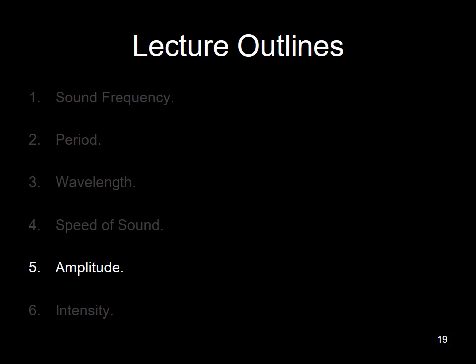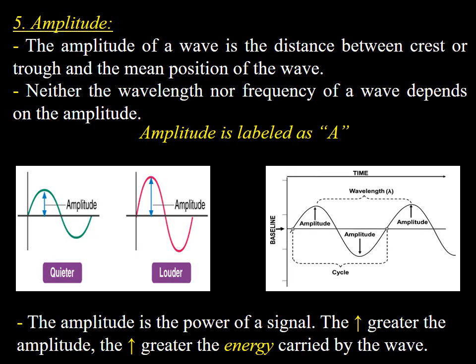What is sound amplitude? The amplitude of a sound wave is defined as its loudness, or the maximum displacement of vibrating particles in a medium from their mean position when the sound is produced. The amplitude of a wave is the distance between the wave's crest or trough and its mean position. The wavelength and frequency of a wave are not affected by its amplitude. Finally, the greater the amplitude, the greater the energy carried by the wave.